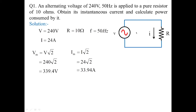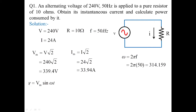Since it is a resistor, voltage and current are in phase. The angular frequency ω = 2π × 50 = 314.159 rad/s. The instantaneous value of voltage is v = Vm sin(ωt) = 339.4 sin(314.159t). Vm is the maximum value of voltage and V is the RMS value of voltage.